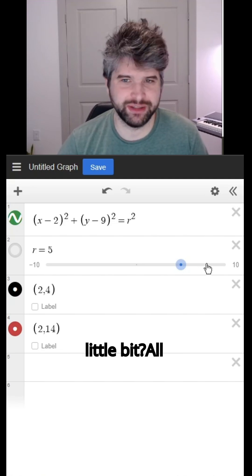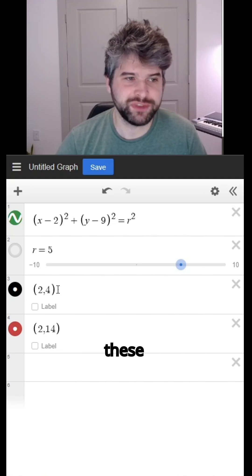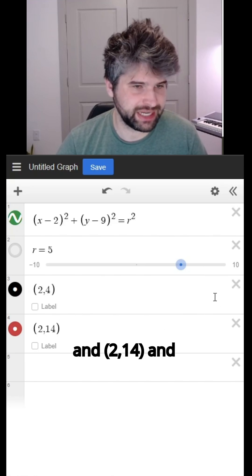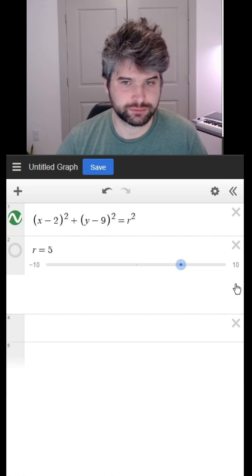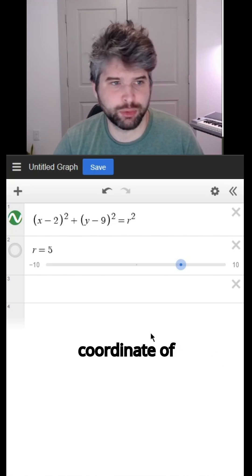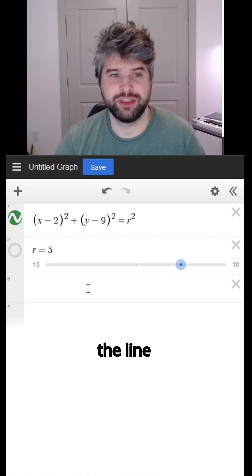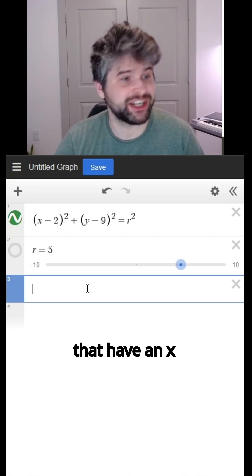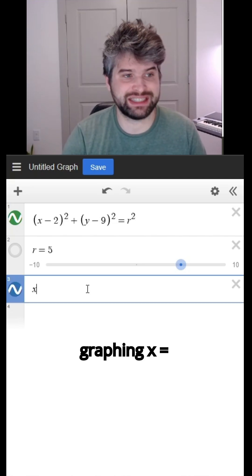All right, well, let's remove these points (2, 4) and (2, 14) and make sure that they're on the circle. All right, both of those points had an x-coordinate of two. So I'm gonna graph the line containing all the points that have an x-coordinate of two by graphing x = 2.